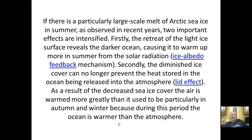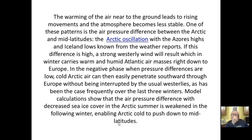As a result of decreased sea ice cover, the air is warmed more greatly than it used to be, particularly in autumn and winter, because during this period the ocean is warmer than the atmosphere — which explains why Alaska has been having mild winters lately. The warming of air near the ground leads to rising movements, making the atmosphere less stable. One of these patterns is the air pressure difference between the Arctic and mid-latitudes: the Arctic Oscillation.